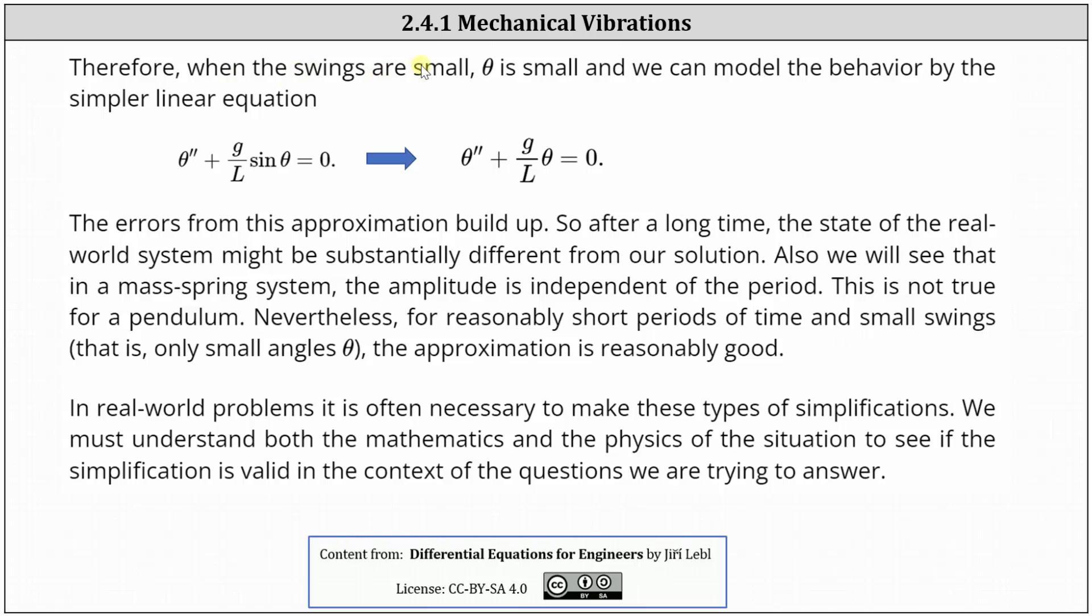Therefore, when the swings are small, theta is small, and we can model the behavior by the simpler linear equation shown here on the right. We're simply replacing sin(theta) with theta. The errors for this approximation build up. So after a long time, the state of the real world system might be substantially different from our solution. Also, we will see that in a mass-spring system, the amplitude is independent of the period. This is not true for a pendulum. Nevertheless, for reasonably short periods of time and small swings, the approximation is reasonably good.